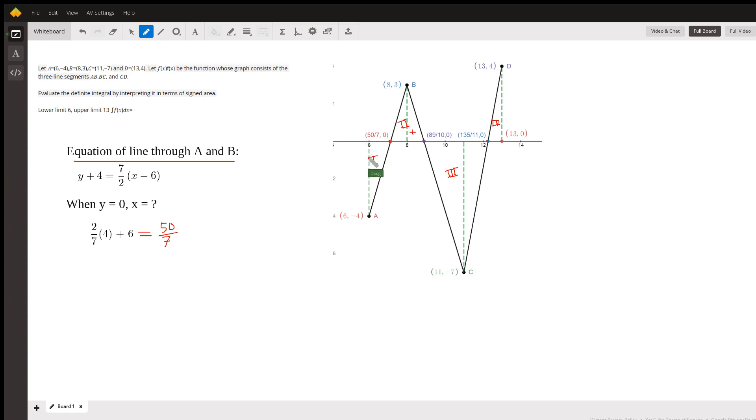So, for example, to find the area of triangle 1, this green dashed line represents the altitude or the height of the triangle. And the distance from here to here is the base.